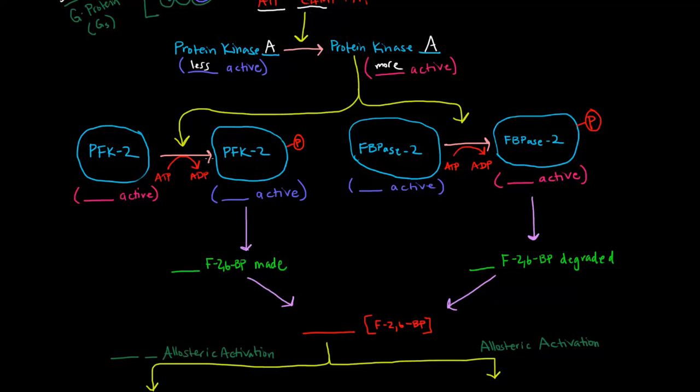So PFK-2, we just said this is the thing that makes fructose-2,6-bisphosphate. So fructose-2,6-bisphosphate is an activator of glycolysis. So we do not want an activator of glycolysis to be around for glucagon, right? We don't want to break down glucose, we want to make it. So PFK-2, we want it to be less active. So it starts off more active and we make it less active. So in this case, adding the phosphate made this protein less active. If it's less active, that means less fructose-2,6-bisphosphate will be made.